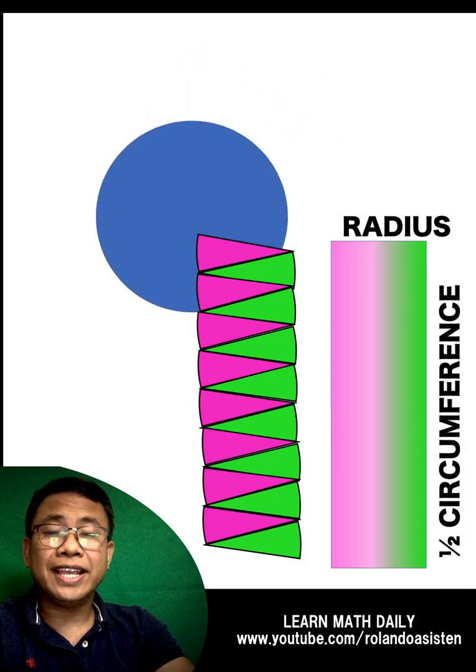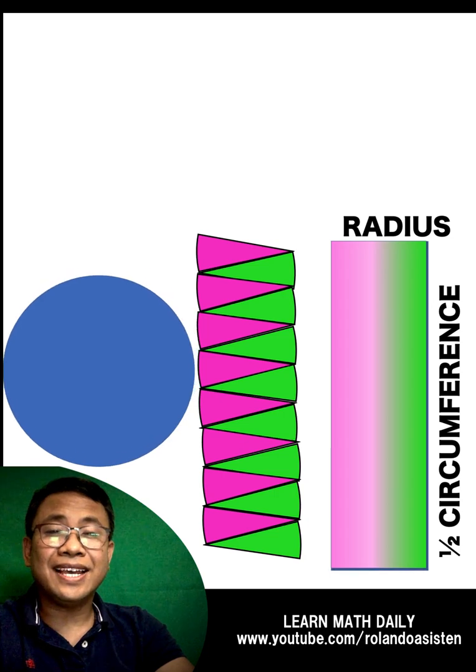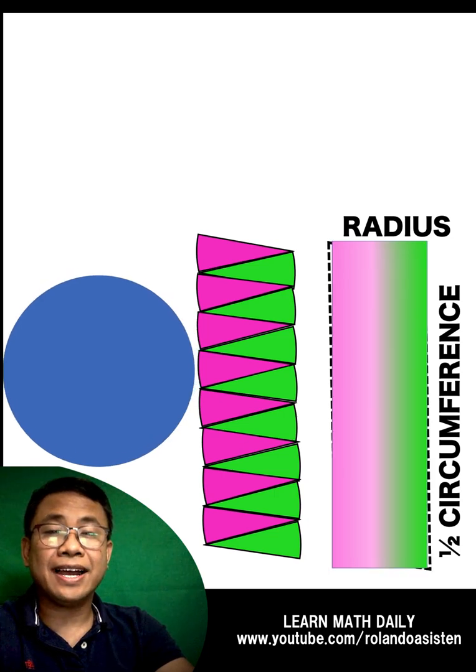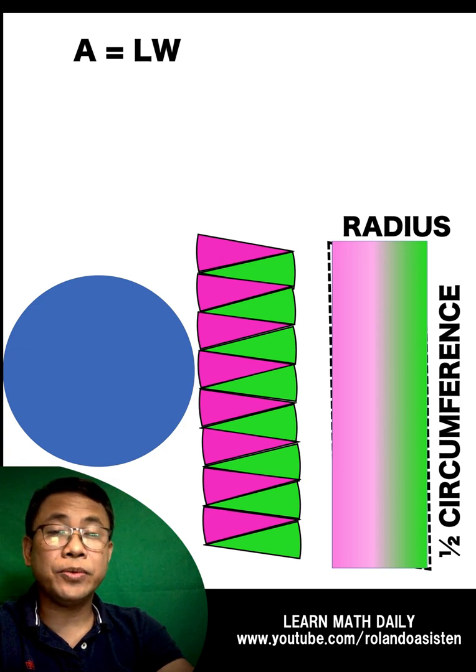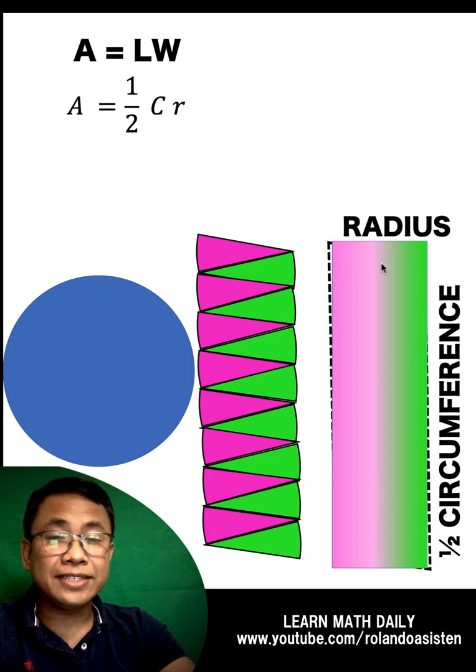Since our figure is a rectangle, then we can now find the area of this resulting shape by the formula area equals the length times the width, where the length is this part, which is one half the circumference. The width is this radius.